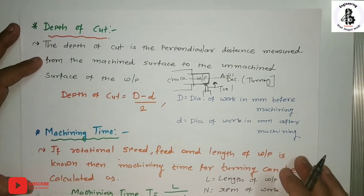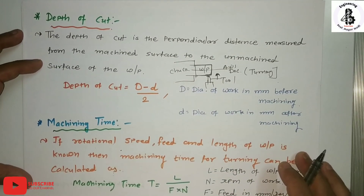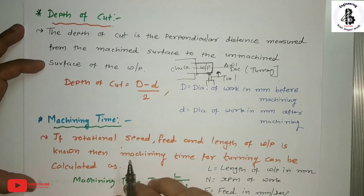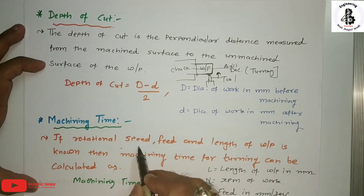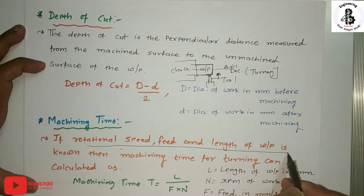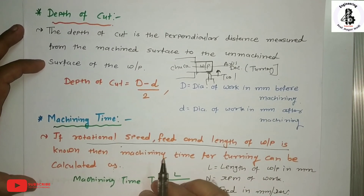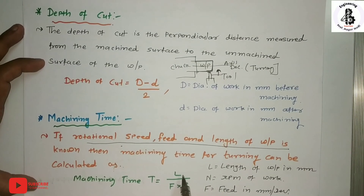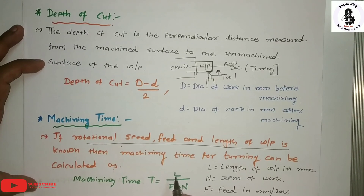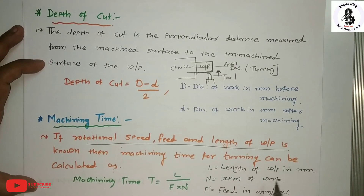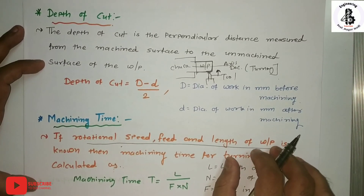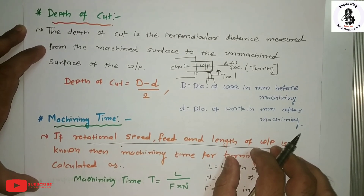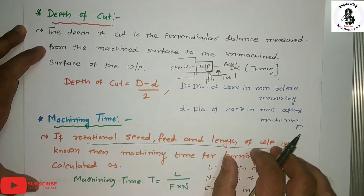The fourth important part is machining time for lathe operations. Machining time depends upon speed, feed, and depth of cut. If the rotational speed, feed, and length of the workpiece are known, the machining time for turning can be calculated as: T = L / (F × N), where L stands for the length of the workpiece in mm, N is the RPM of the workpiece, and F is the feed in mm per revolution. These four parameters — cutting speed, feed, depth of cut, and machining time — are the important parameters you must control for lathe operations.